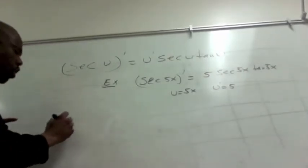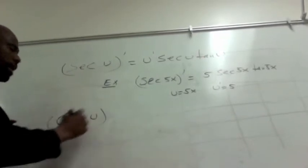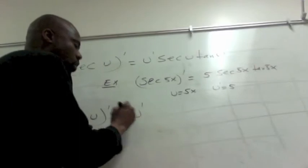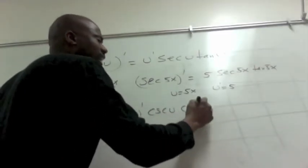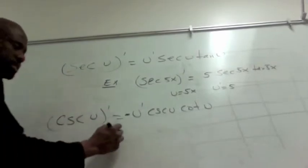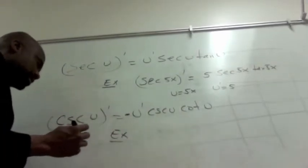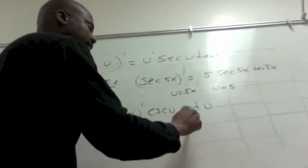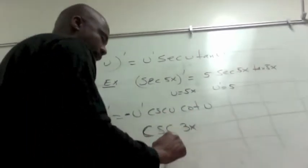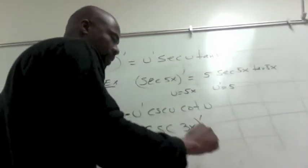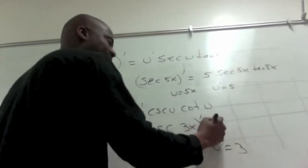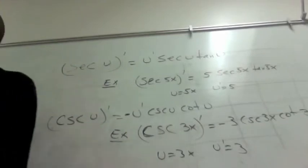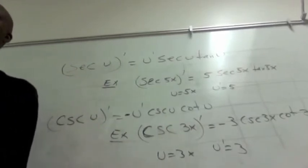And the last one is cosecant of u. Cosecant of u prime is negative u prime cosecant of u cotangent of u. Example: cosecant of 3x. U is 3x, so u prime is just 3. It's going to be negative 3 cosecant of 3x cotangent of 3x. This completes all six trigonometric function derivatives.